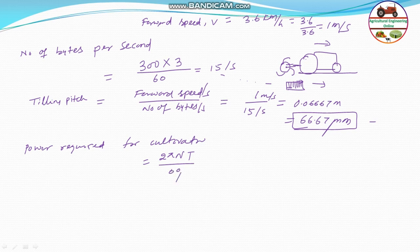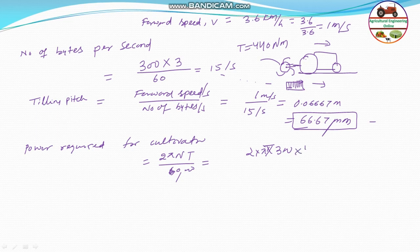The torque of the rotor is 440 newton meter and N is 300 RPM, so the power is 2π into 300 into 440 divided by 60,000, which equals 13.82 kilojoule per second. We are keeping it as kilojoule per second because we still need to calculate the specific work per revolution.